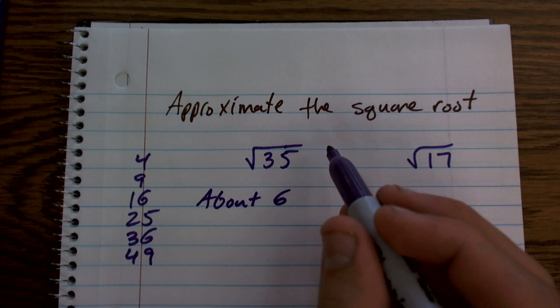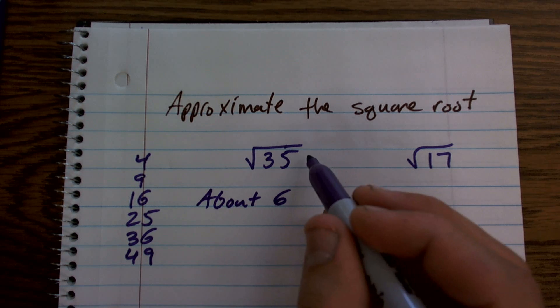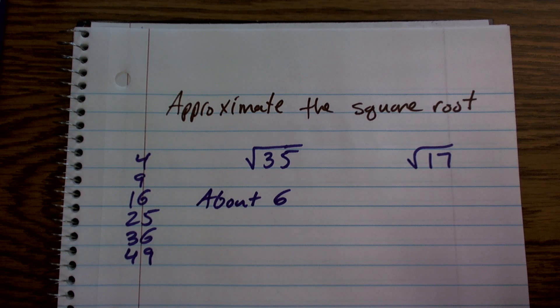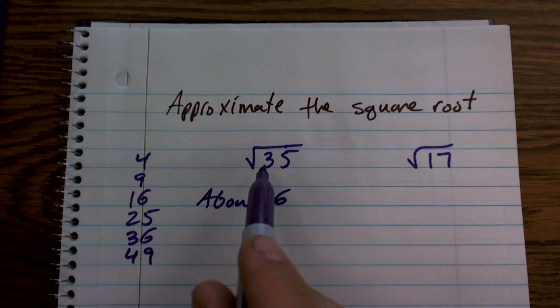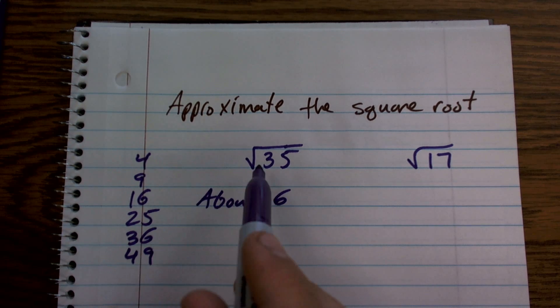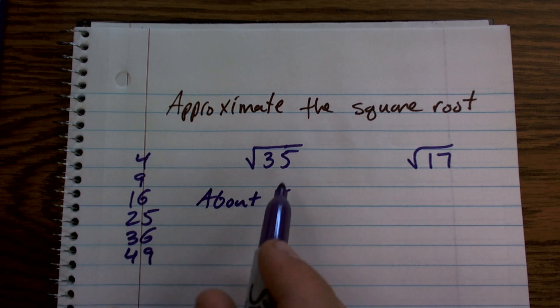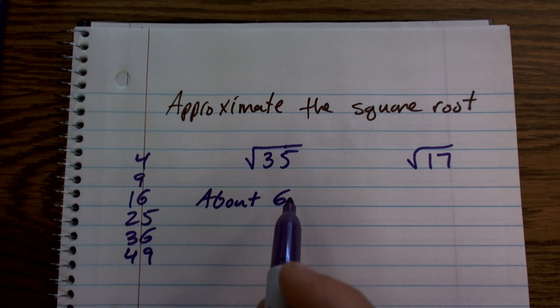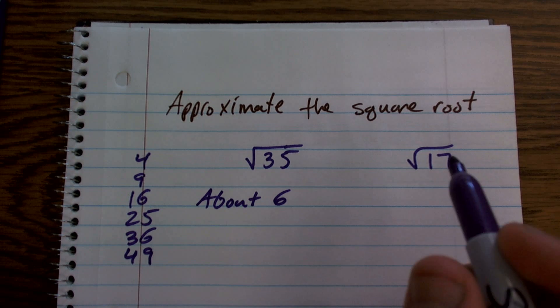So it's not exactly 6, but it's going to be close. It's going to be an irrational number. Since you can't take it as a perfect square, it's going to be an irrational number, but it's going to be very close to 6, probably in the 5.8, 5.9 realm.